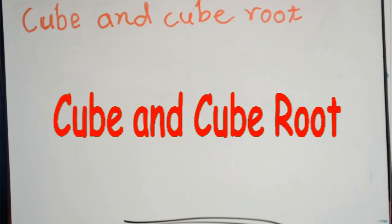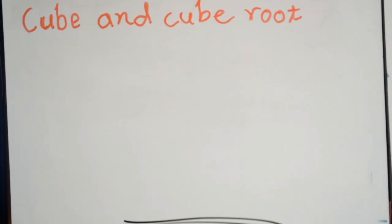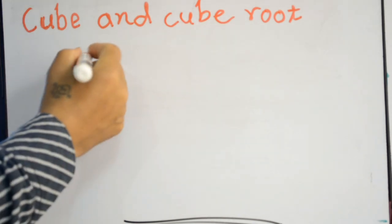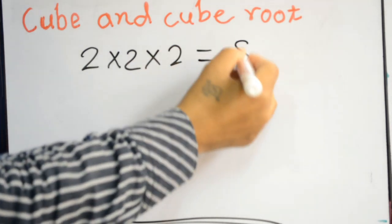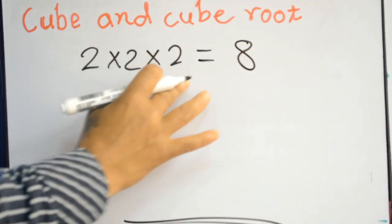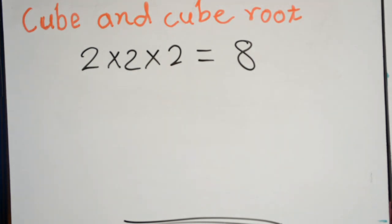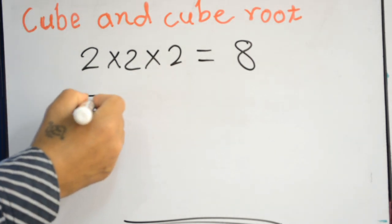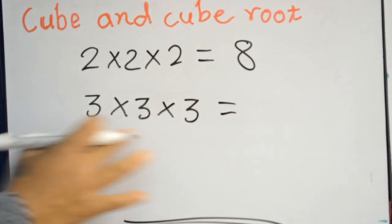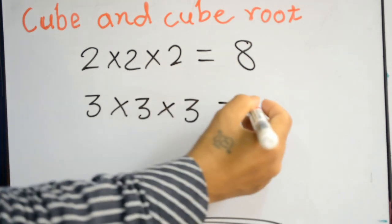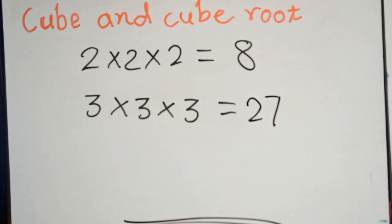Today we will discuss cube and cube roots. A cube number is the product of three identical numbers. For example, 2 times 2 times 2 equals 8, so 8 is a cube number. Another example: 3 times 3 times 3 equals 27, so 27 is also a cube number.